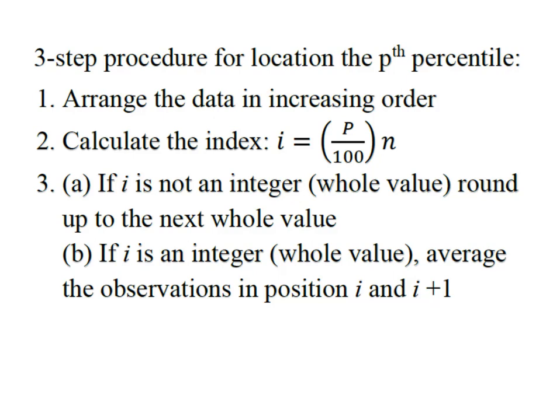We find that by taking p, the percentile of interest, divided by 100, multiply that by n, the number of observations in our data set.